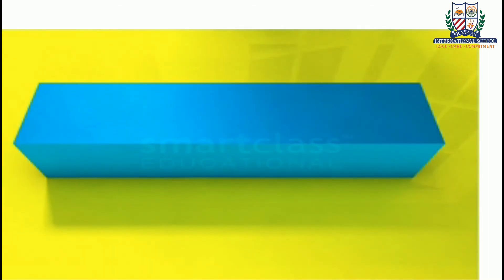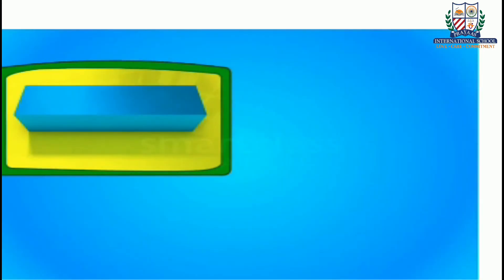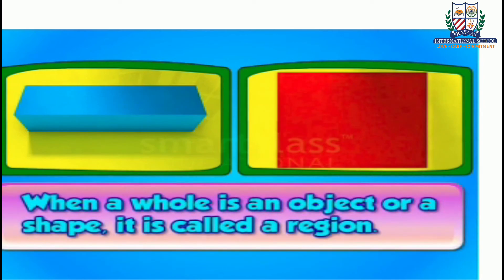So, whole can be either an object or a shape. When a whole is an object or a shape, it is called a region.